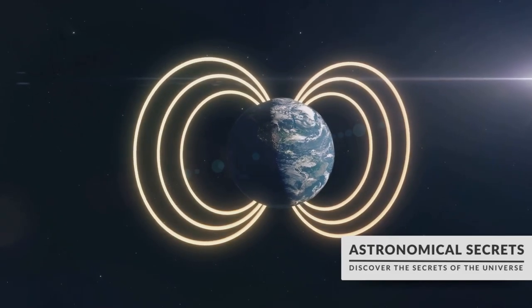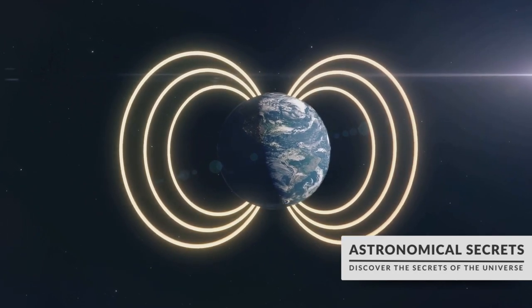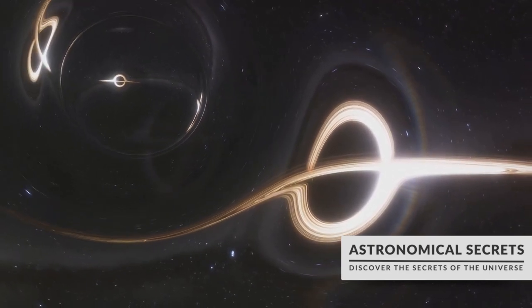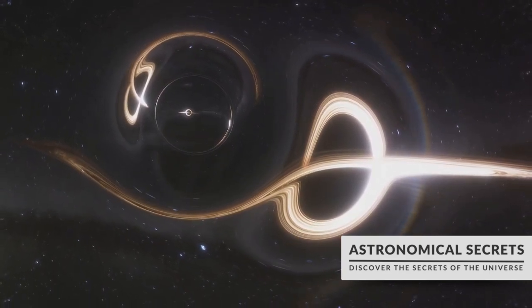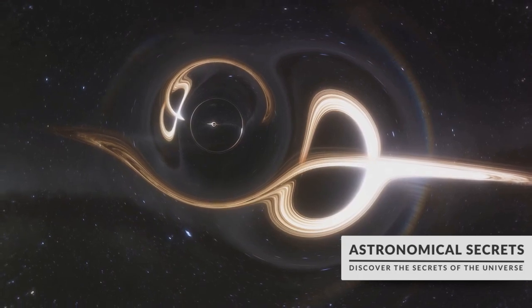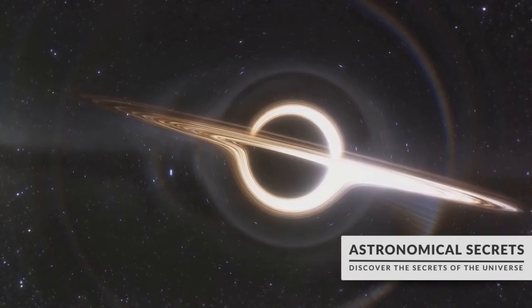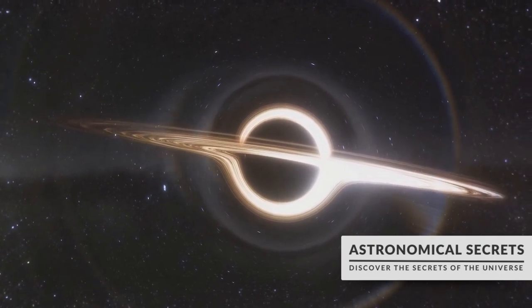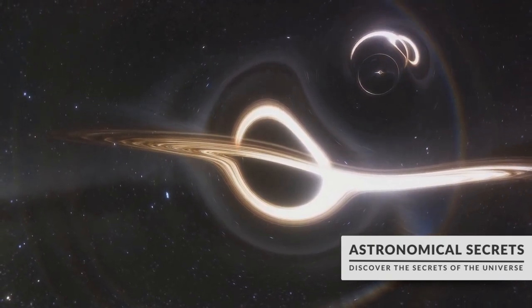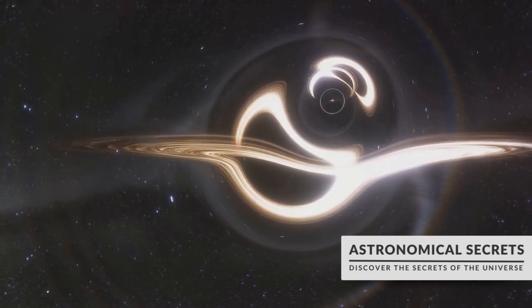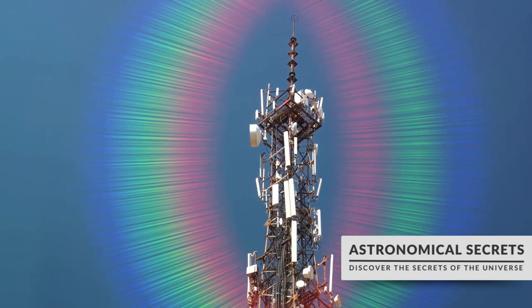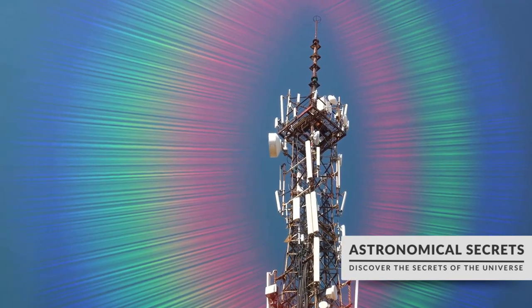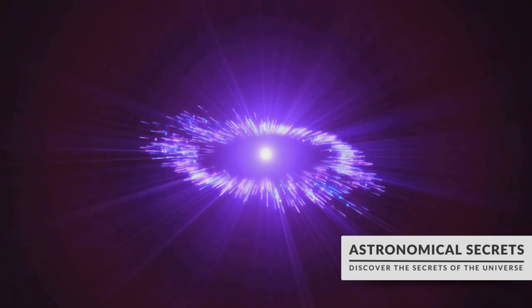Now imagine this compact star spinning at a mind-boggling speed, some even rivaling the best of our kitchen blenders. This rapid rotation paired with a powerful magnetic field is the key to the pulsar's rhythmic ticking. The magnetic field of a neutron star is about a trillion times stronger than Earth's. This intense magnetic field accelerates particles near the magnetic poles to almost the speed of light. These accelerated particles then emit beams of electromagnetic radiation, including the radio waves we detect here on Earth.